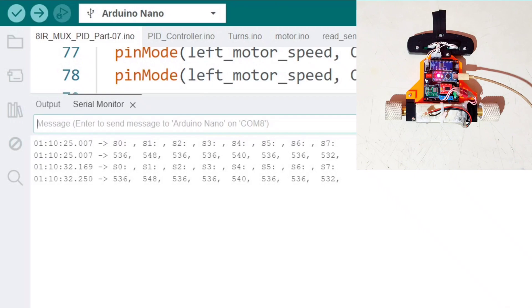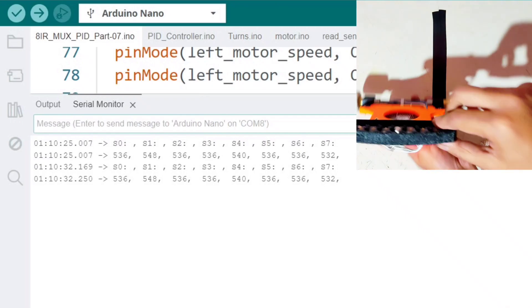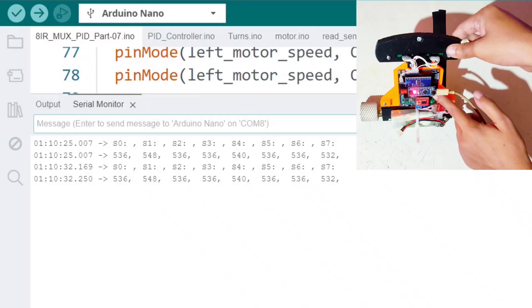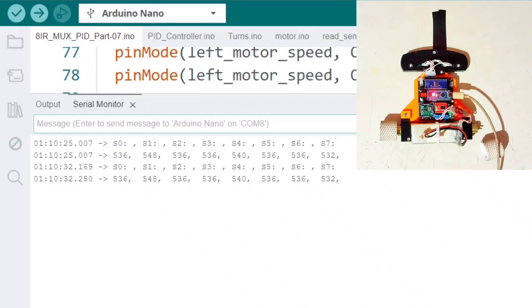To check whether the values are being saved in the correct EEPROM addresses, I cover the rightmost sensor and leave the others uncovered. This way, only the leftmost sensor consistently receives low values, while the others receive higher values. After calibration, I reset the Arduino to verify.